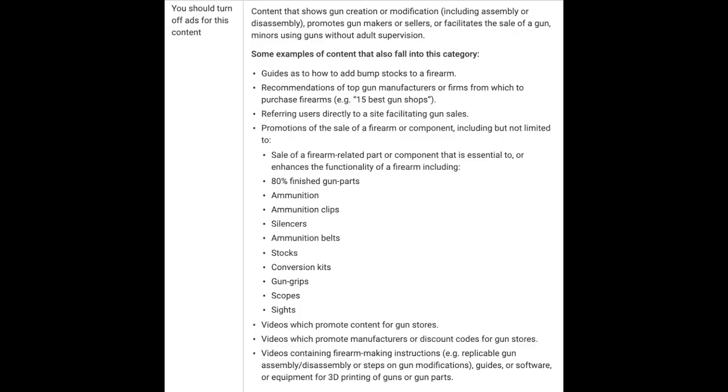Now let's move into where you're going to see no ads at all, and this one's really important to understand. Content that shows gun creation or modification, including assembly or disassembly, promotes gun makers or sellers, or facilitates the sale of a gun, as well as minors using guns without adult supervision — these will earn you the no ads status and the yellow icon. Minors using guns without adult supervision we think is pretty clear, but let's dig into the rest of it, particularly the promotion of sale.